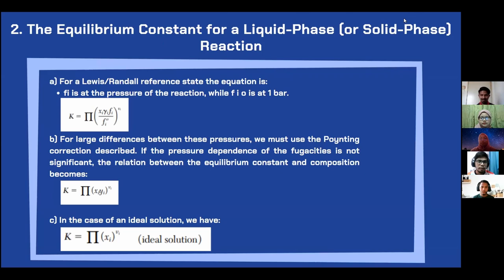For the second case, for large difference between this pressure, we must use the Poynting correlation described. If the pressure dependence of the fugacity is not significant, the relation between the equilibrium constant and composition becomes the equation below. The last case is, in case of an ideal solution, we have the equation below. That's all from me.